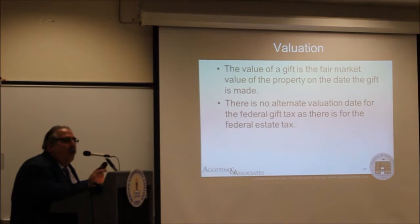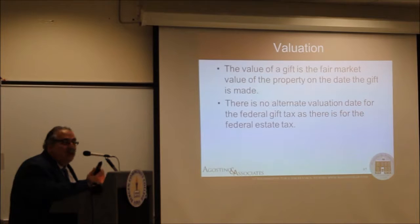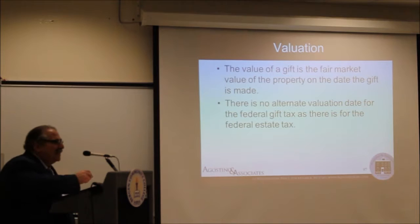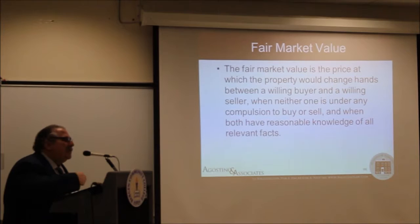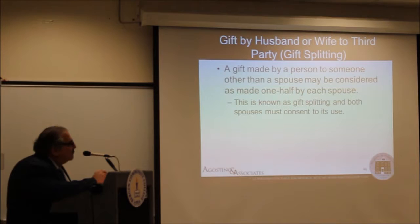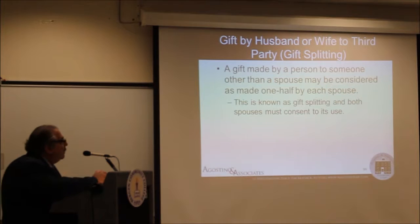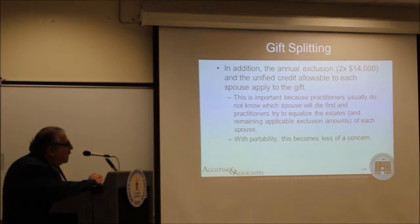Unlike for estate tax, there is no alternate valuation date for gift tax — you cannot use a value from six months after the date of the gift. Fair market value is basically the price you would sell something to a stranger. Husbands and wives can gift split — that's important in gift tax cases. If both spouses want to make gifts to a child, it's $14,000 each, but it can all come from one bank account, giving $28,000 through gift splitting. You need to file a gift tax return to elect gift splitting when money comes from one spouse's account.